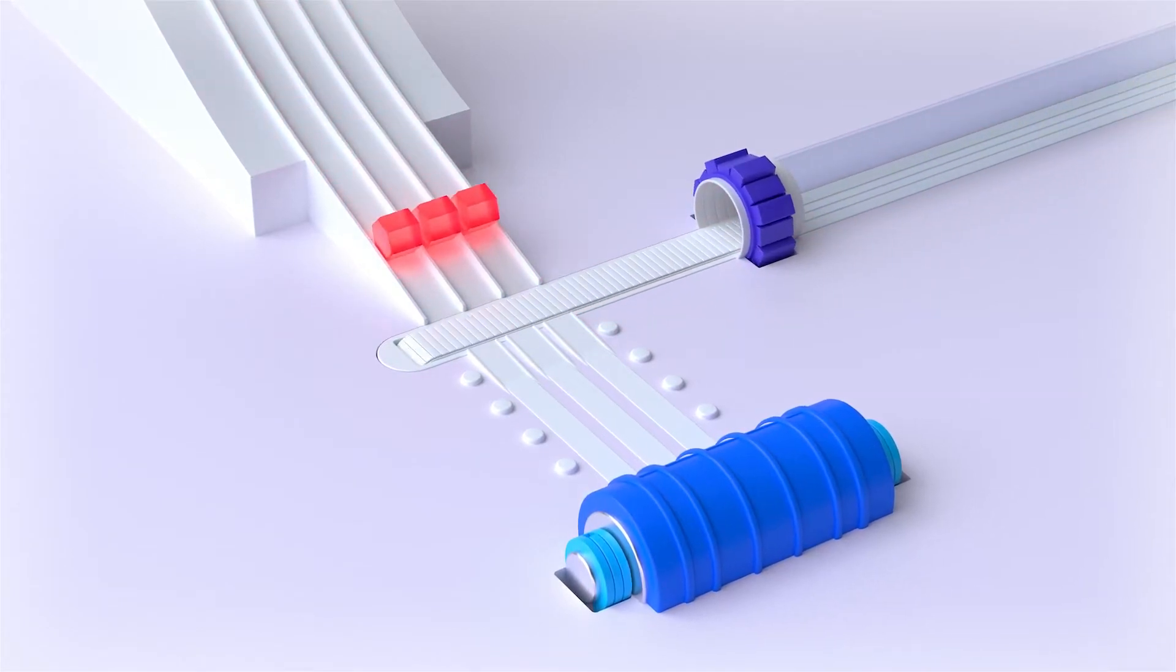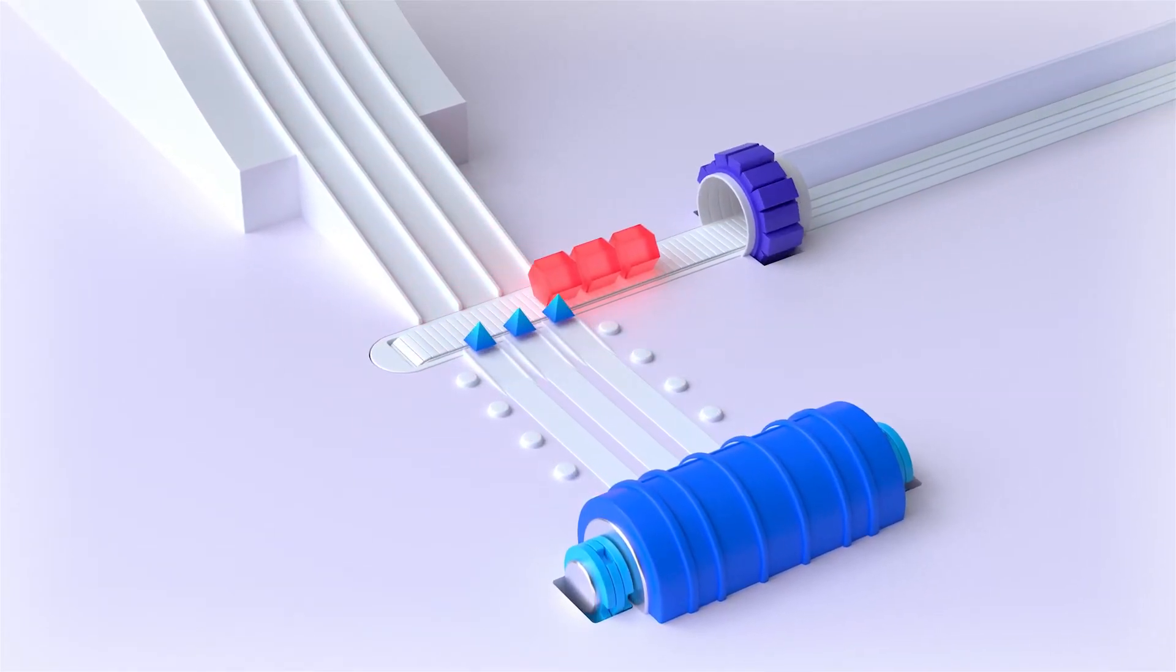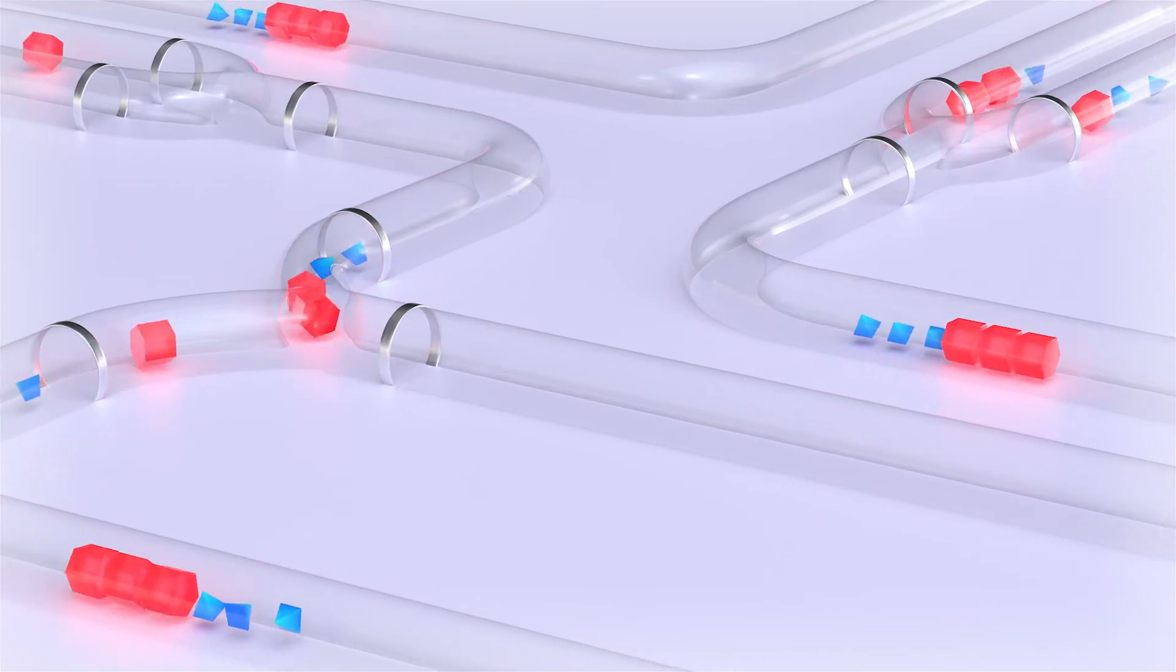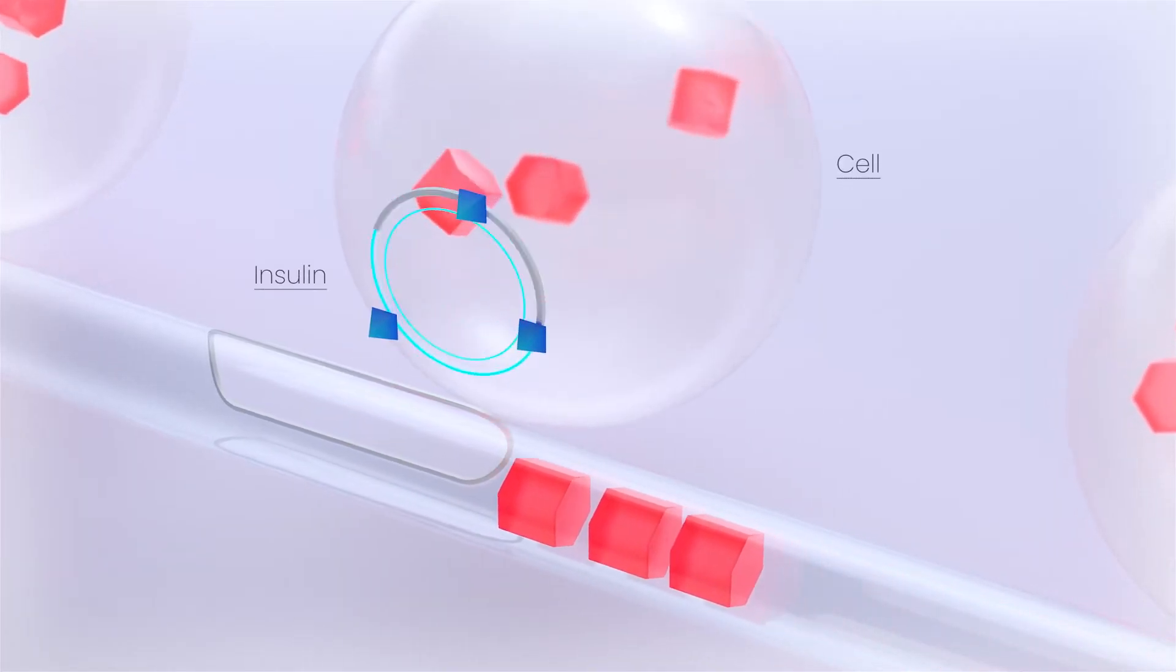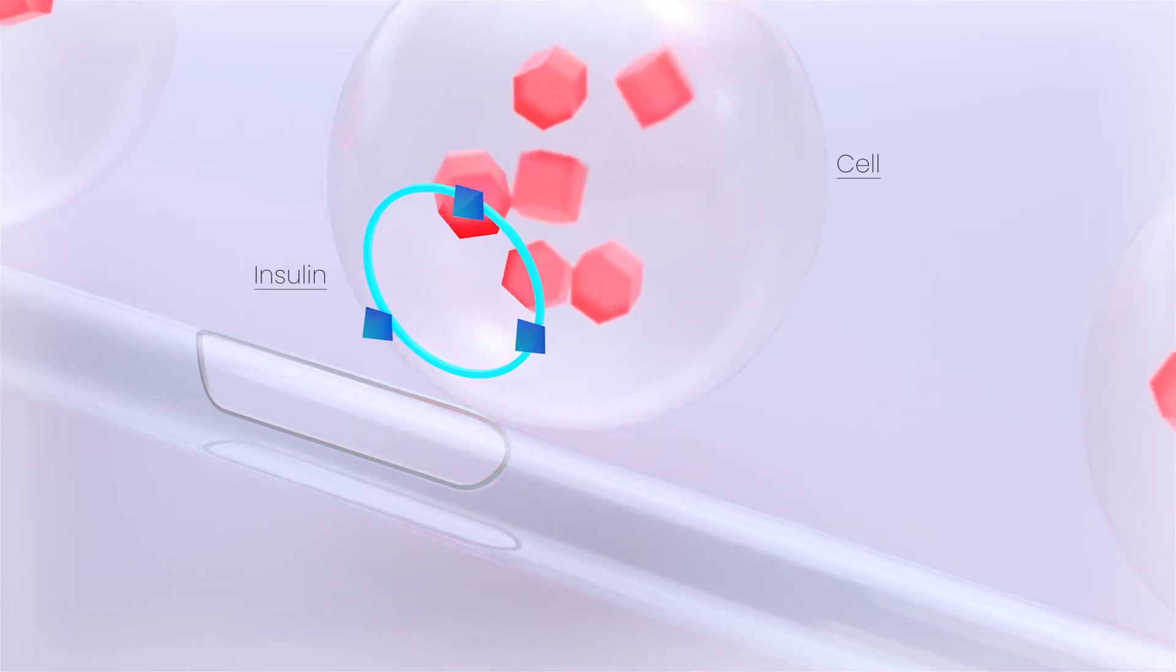Together, glucose and insulin travel through your blood vessels to every cell in your body. Insulin acts like a key, allowing glucose to enter a cell and provide it with power.